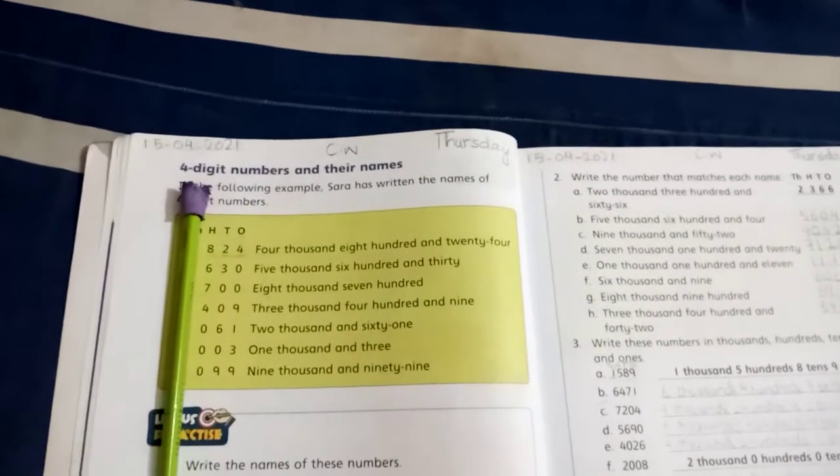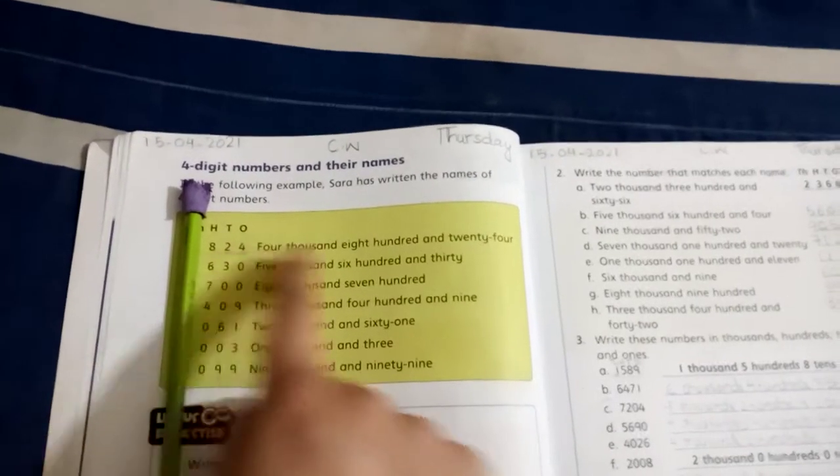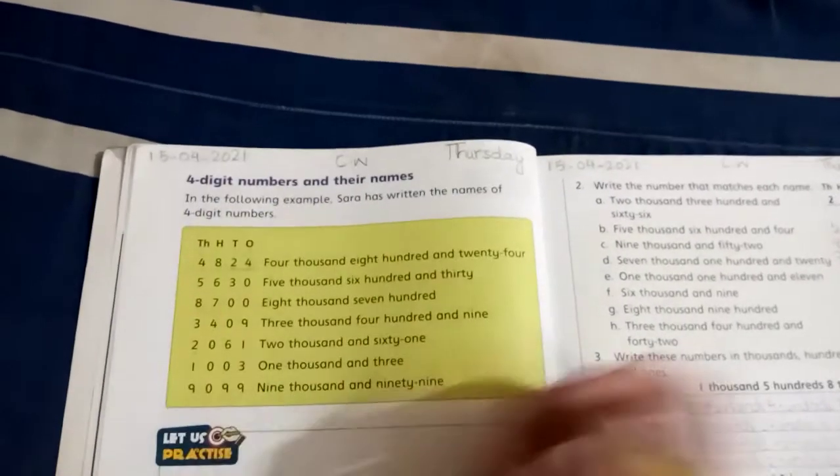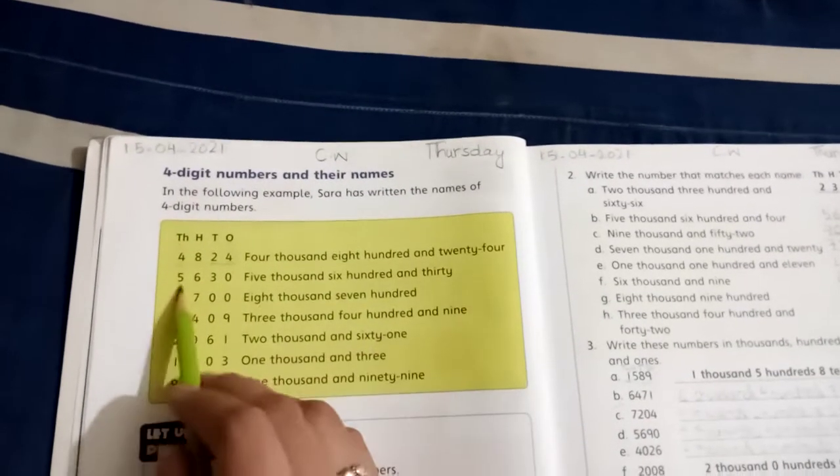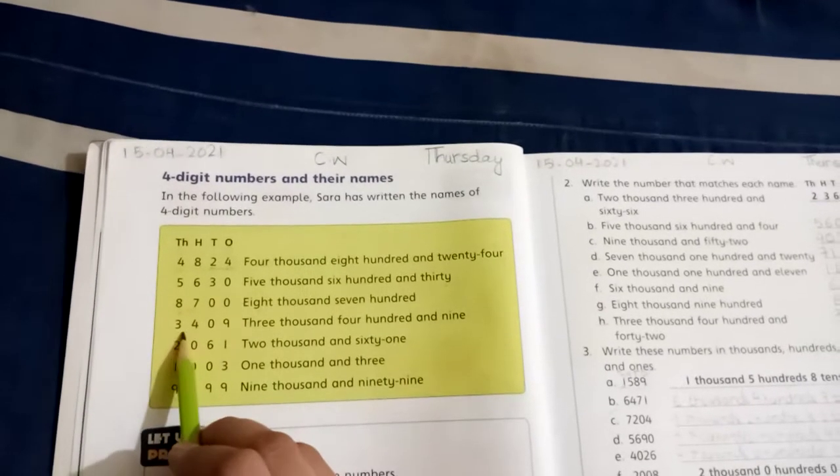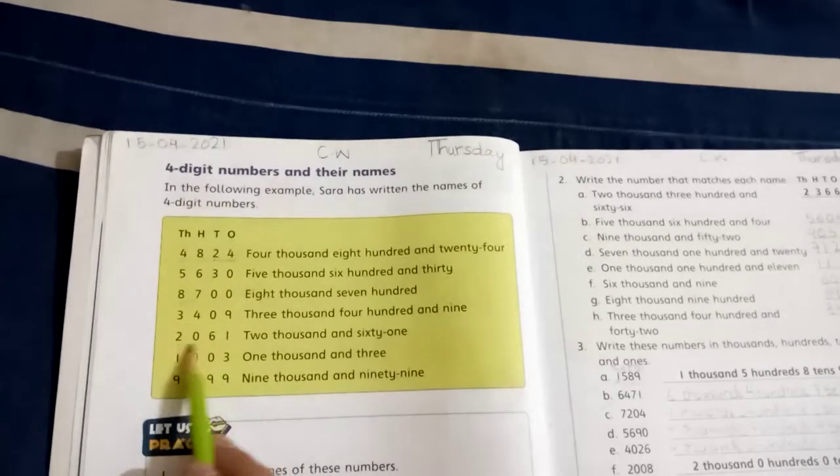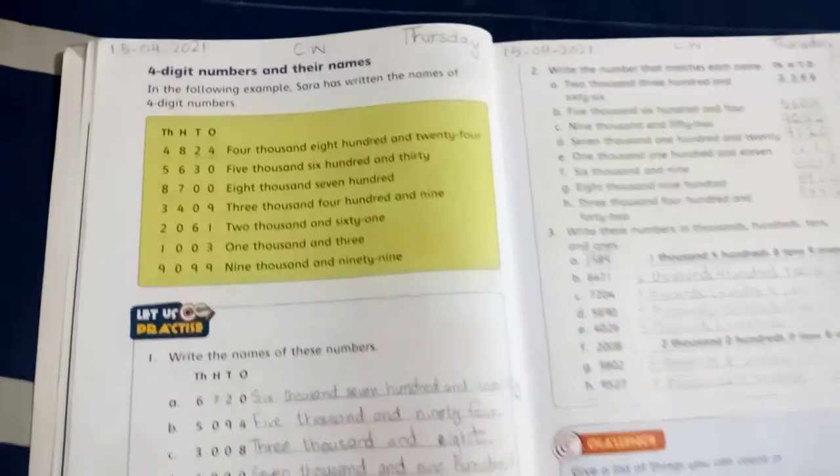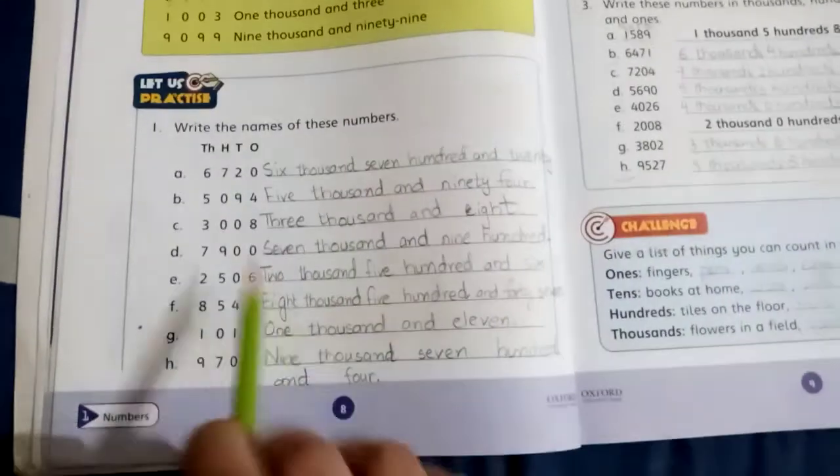For example, 8,124, then 5,630. Now thousands will be added, so 4,824, then 5,630, 8,700, 3,409, 2,061, then 1,003, then 1,099. Next, you have to write the numbers in words. You will do it yourself.